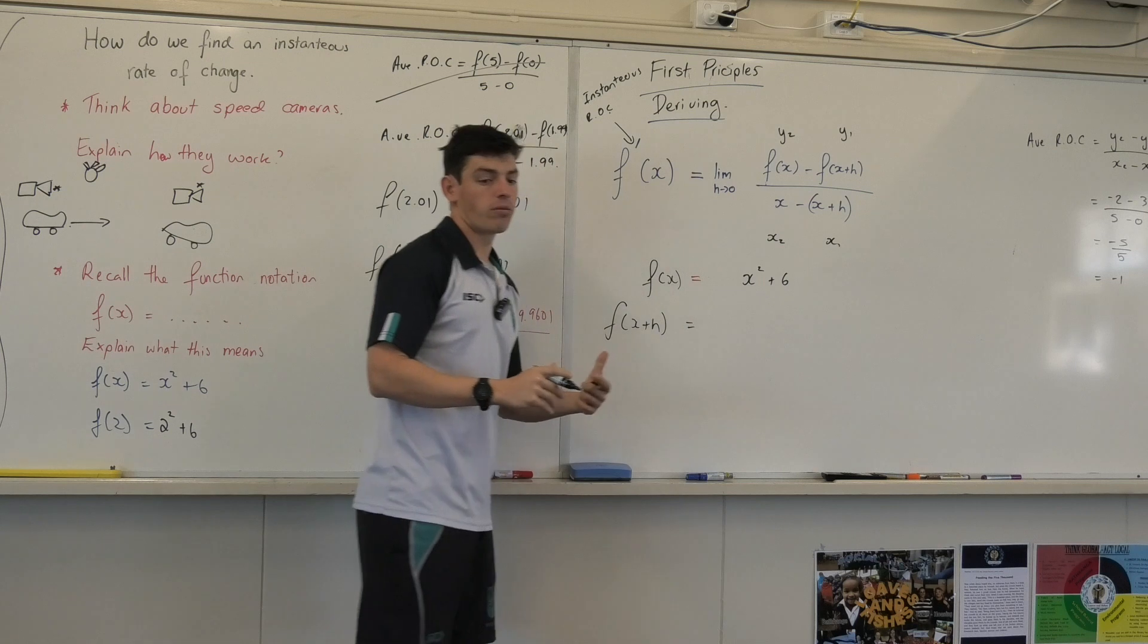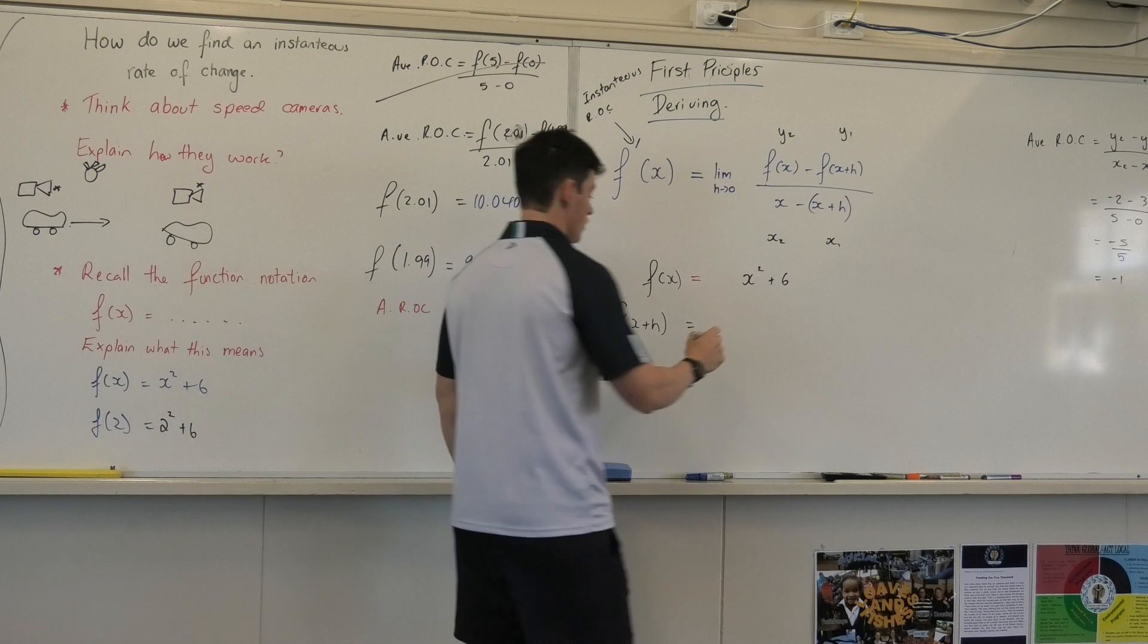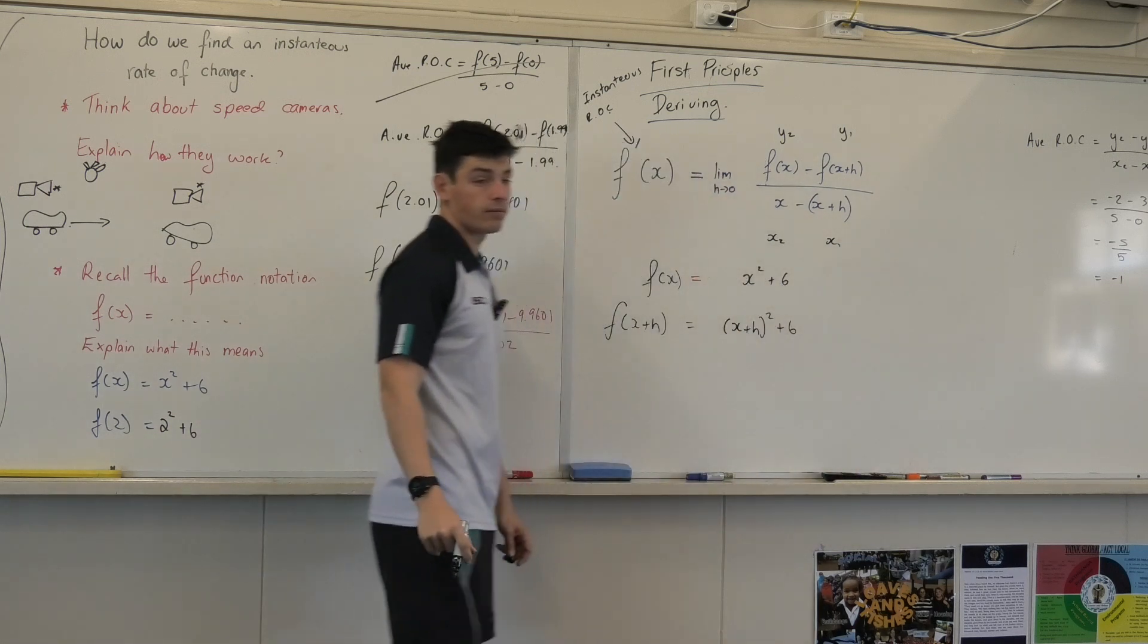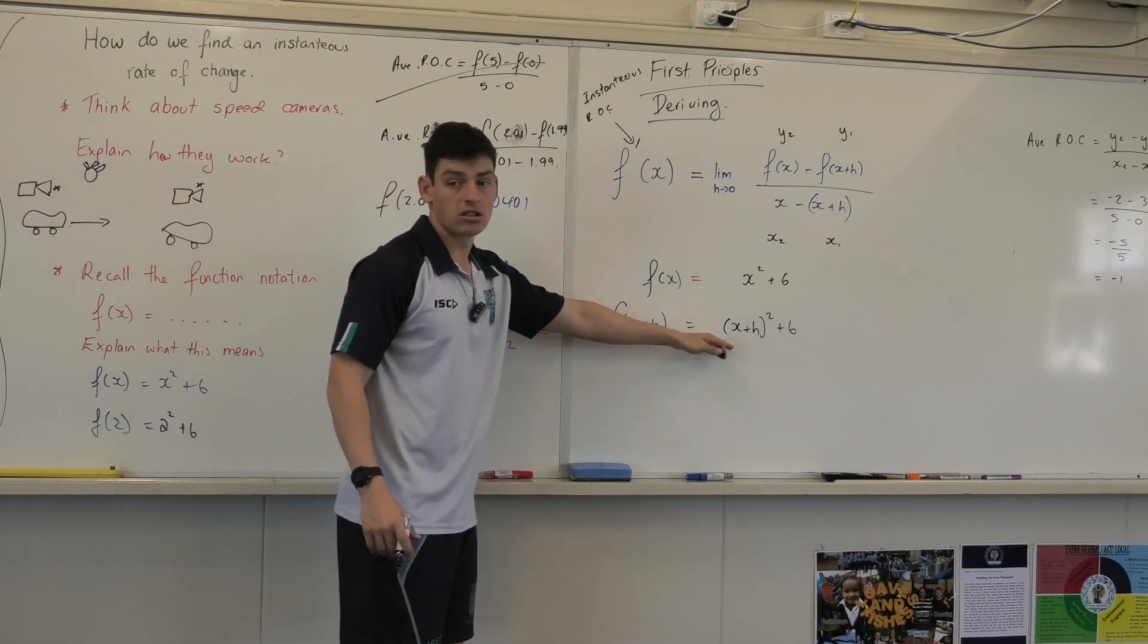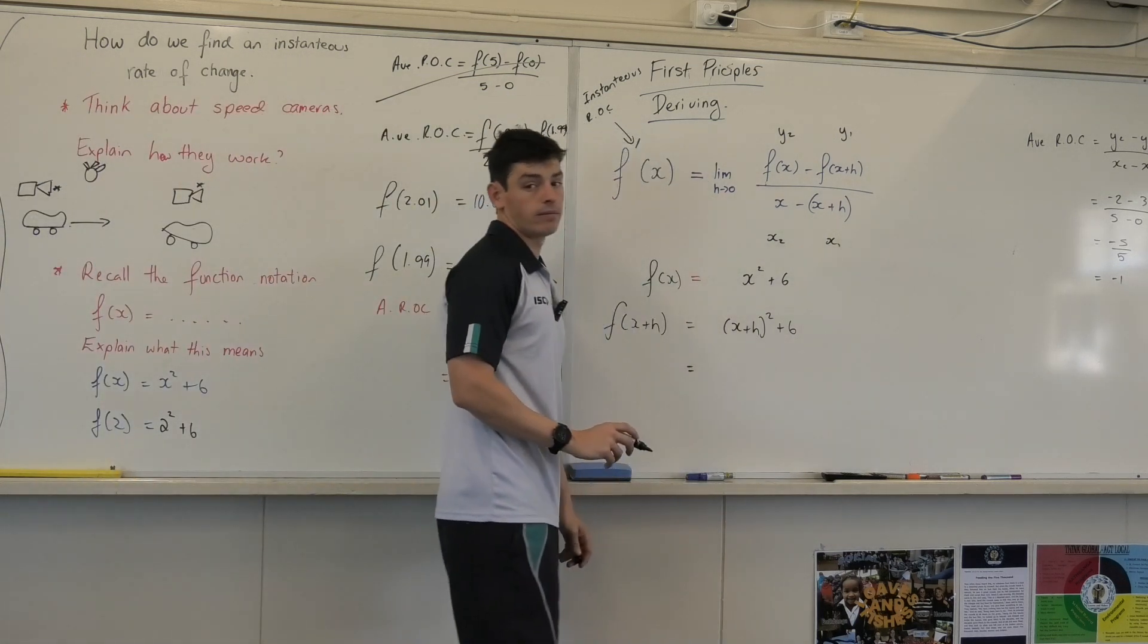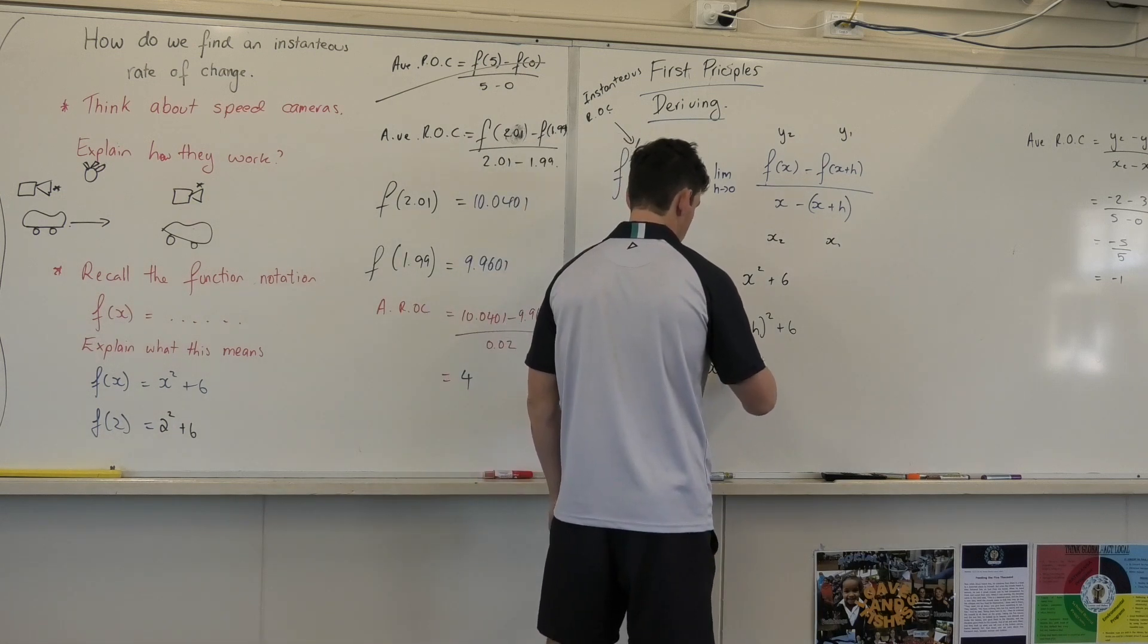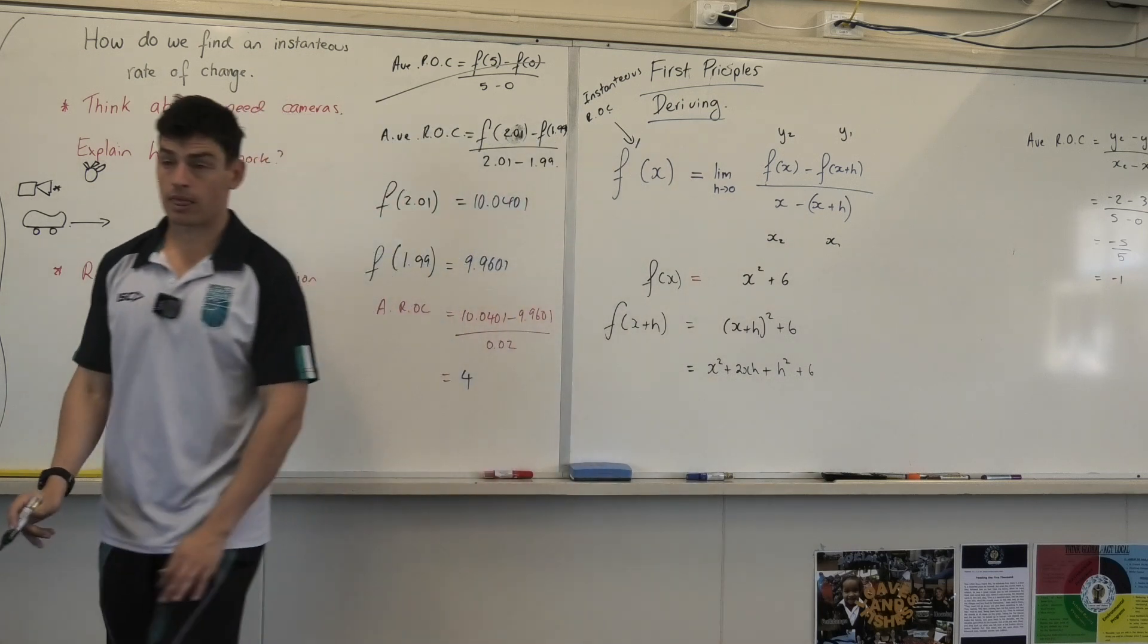fx plus h. Any time I see x, what should I replace it with? x plus h. So I've got now x plus h squared plus 6. Do you get that? That's fx. And fx plus h is, I've just replaced it. Now I'm going to expand that a little bit further. So how do I expand those brackets? x plus h, x plus h. Yes, so it'll be x squared plus 2xh plus h squared plus 6. Are we good with that?